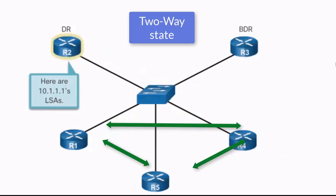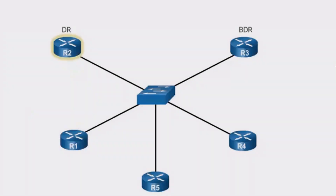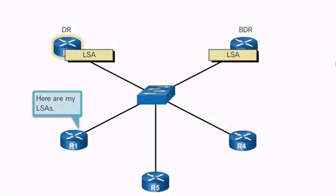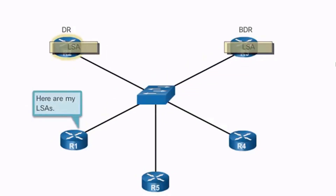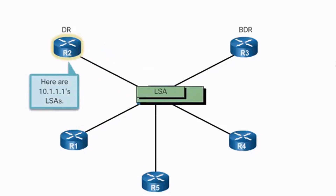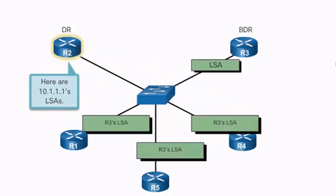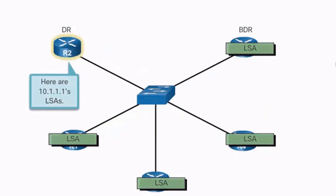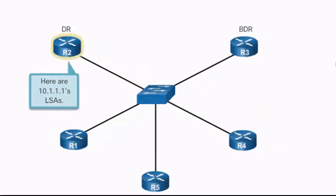R1, R4, and R5 won't concern themselves with having the exact same topology table as each other. So when R1 has a change, R1 only notifies the DR and the BDR, indicating full convergence and sharing the change. The DR then notifies all routers it has a full state with — which is everybody. But R4 and R5 don't notify each other, because they only have a two-way state with each other and a full state with the DR and BDR.